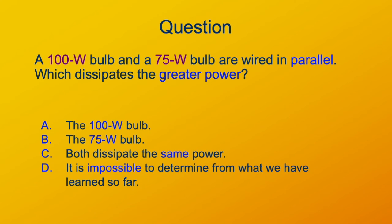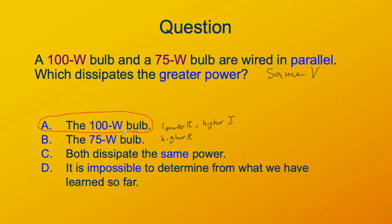Now imagine the 100-watt and 75-watt bulbs are in parallel. Which one dissipates more power? In parallel they have the same voltage. The 100-watt bulb has the lower resistance, and the 75-watt bulb has the higher resistance. Lower resistance means higher current, and with the same voltage, higher current means higher power — so in this case the 100-watt bulb dissipates more power. That's not surprising: this is how a house is wired. All outlets are in parallel with the same voltage, so the 100-watt bulb is the one that dissipates more power.